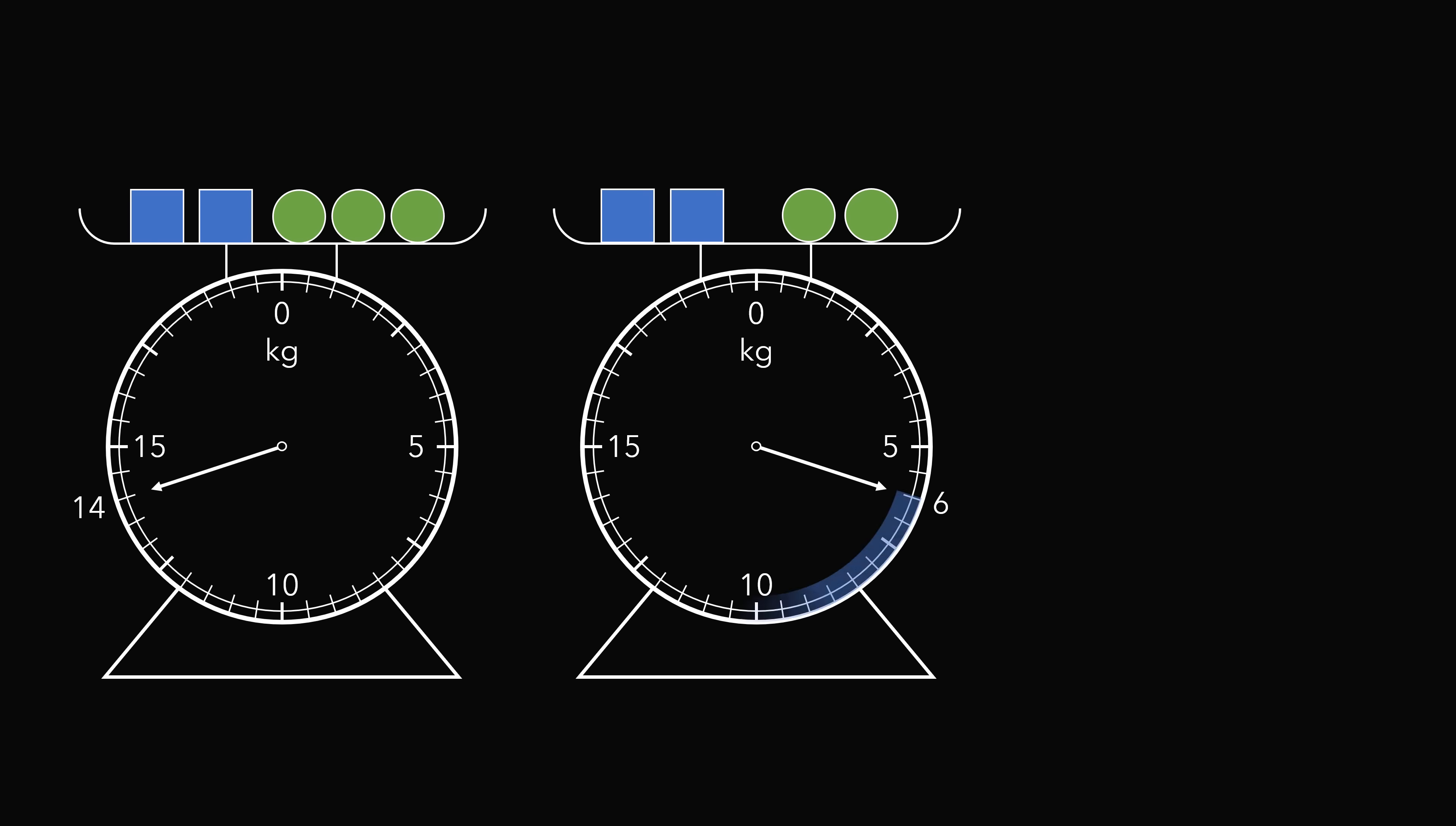So the scale is showing 6 kilograms, so we need to add another 6 kilograms, because we know that one square and one circle together will be 6 kilograms. So this will be 12 kilograms, and the scale will show 12 kilograms.